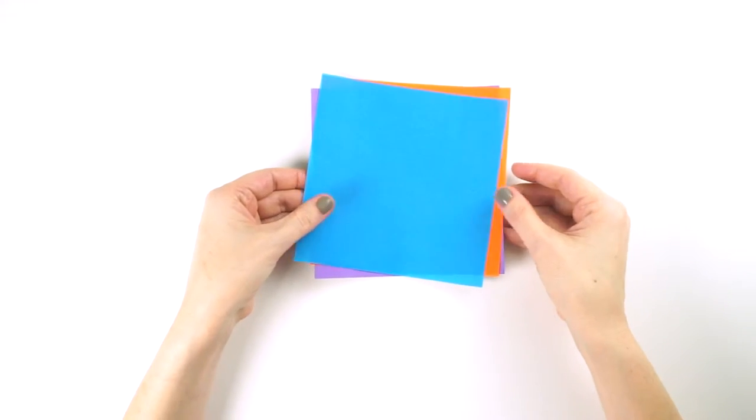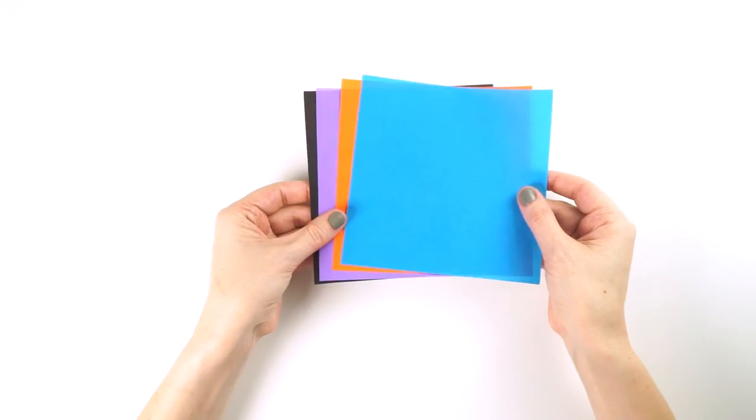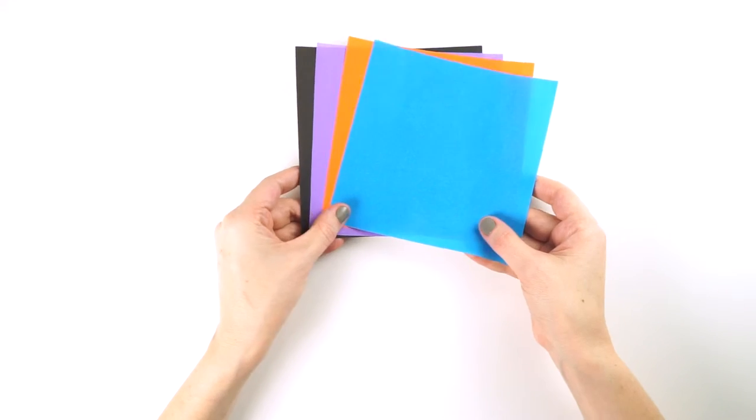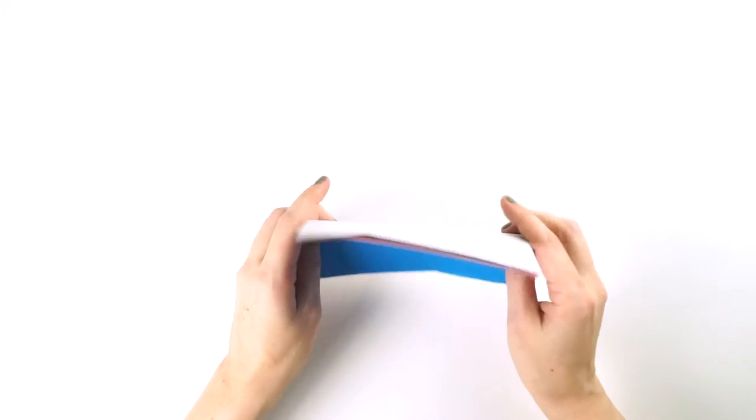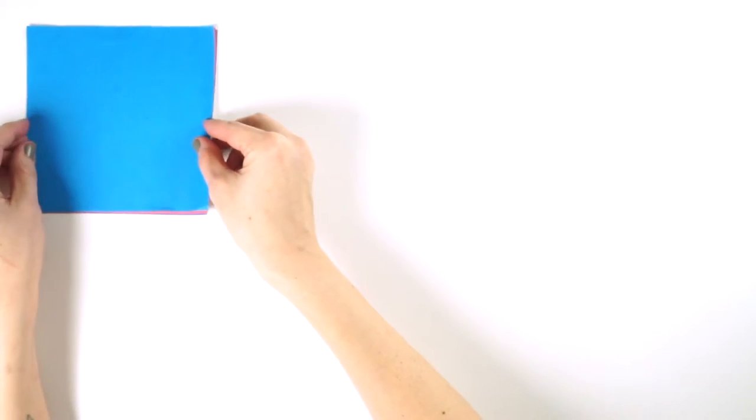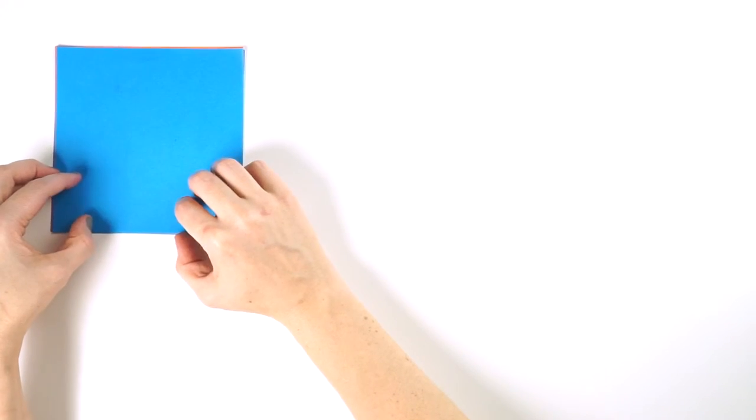The last thing that comes in your paper circuit kit is origami paper. You get a stack of origami paper. This is so you can get started right away with making a circuit. Okay, so first things first, let's just make a basic circuit.